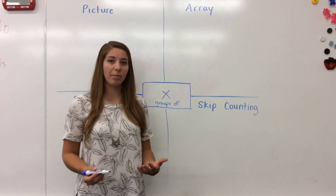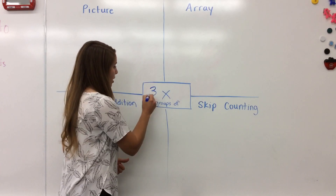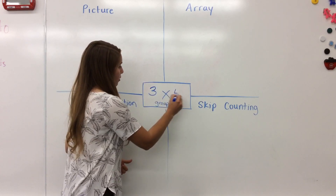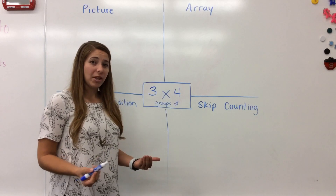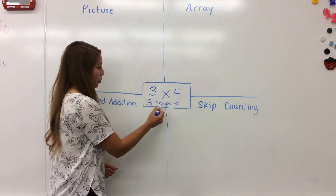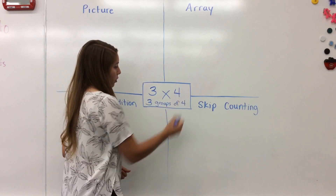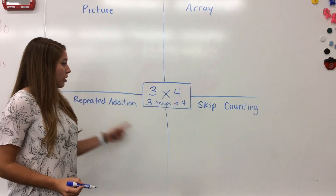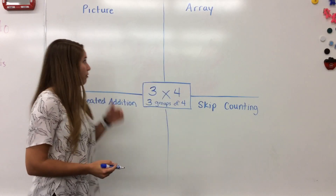So for example, if you saw a problem that said three times four, what you really should be thinking is three groups of four. And then all of these strategies you will be able to do very easily.